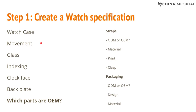When it comes to the glass, you have mineral glass and sapphire — those are the two main options. You can get different treatments like AR coating on the front and inside. For indexing, it can be printed, it could be applied in steel, cutout, and so on. There are different ways to design the indexing, but you need to communicate to your supplier how you want the indexing made.